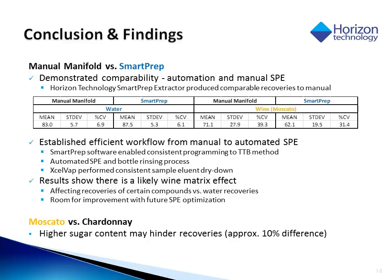To conclude, we have successfully automated the SPE process of extracting pesticides from wine. The SmartPrep software has enabled us to consistently program the TTB method into our system. We have also been able to establish an automated SPE and bottle rinsing process. The XLVAP has also performed consistent sample eluent dry down. The results show there is a likely wine matrix effect affecting recoveries of certain compounds versus the water recoveries, and there is definitely room for improvement with future SPE optimizations. Comparing the sweet wine and the dry wine, we have established that a higher sugar content may hinder recoveries by approximately 10%.